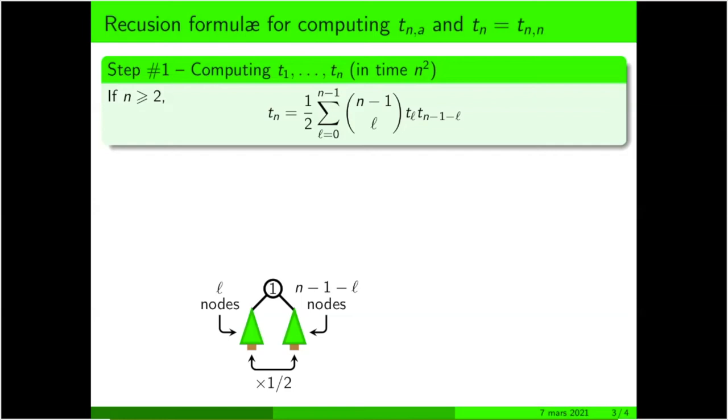Finally, you divide the number you got by two because you could swap left and right subtree, and so the large tree you were looking at was counted twice.